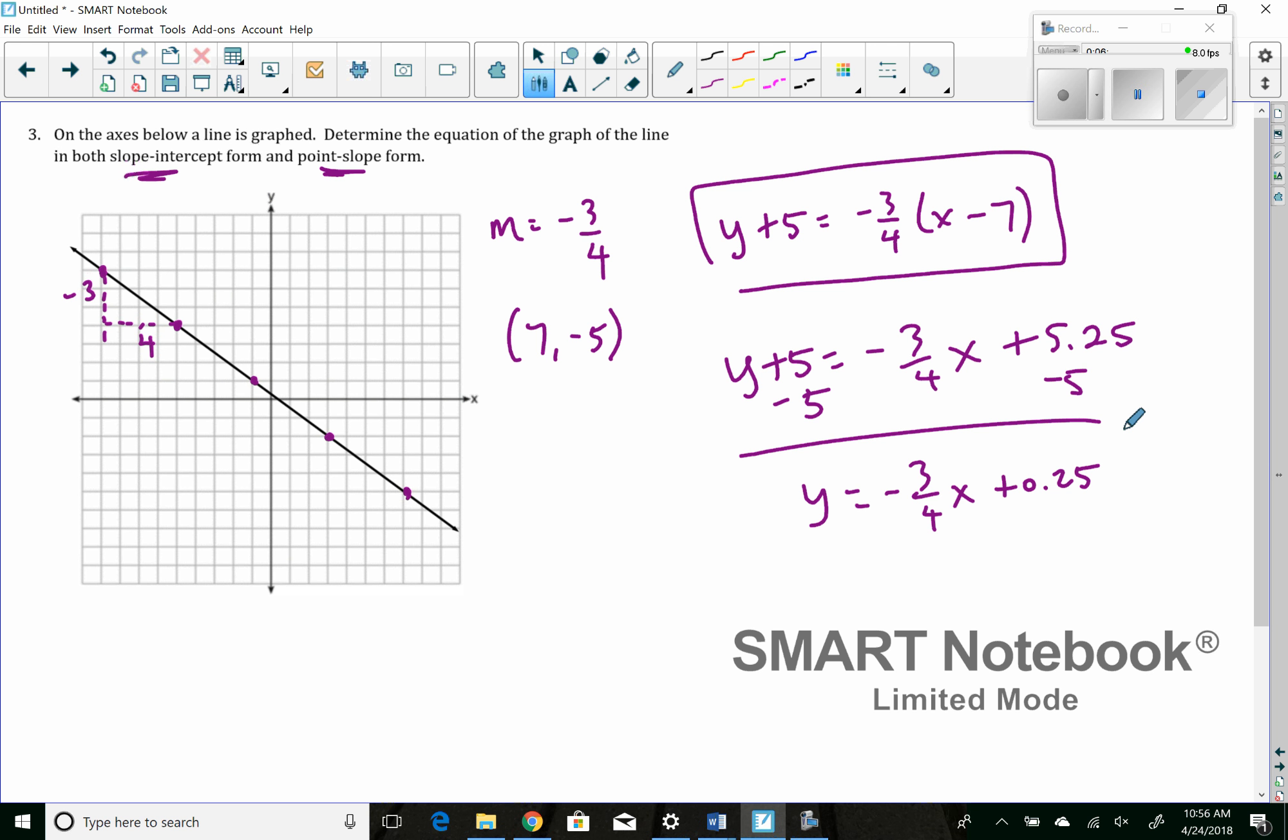If I then subtract 5 from both sides, I get y equals negative three-fourths x plus 0.25. Then I want to look at my graph for a second and say, does that make sense to have a y-intercept of 0.25? It does. Look at where my y-intercept is, it's really a small number, right? So there's your y-intercept. So there's your answer. Hopefully this video helps and we will talk more about this tomorrow.